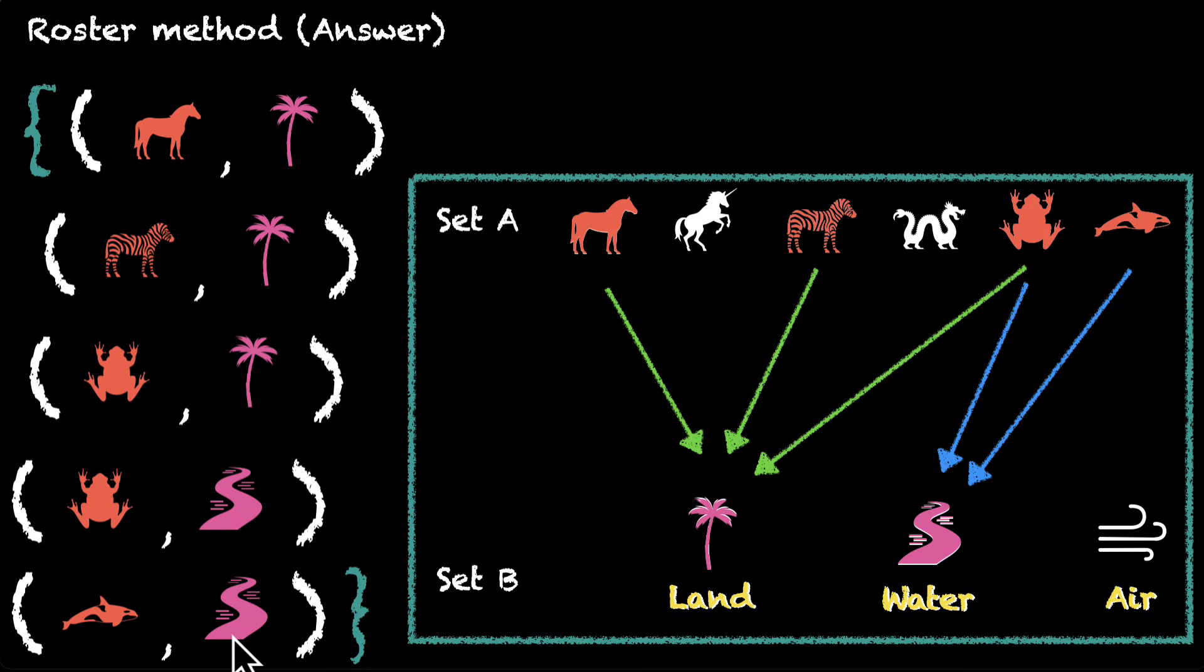And the way to write this in the set builder method is like this. We have R. That's the set of all X and Y. These are ordered pairs such that and after such that you'll have a condition. Just like we have for other sets, we'll have it for relation as well.